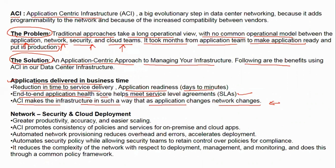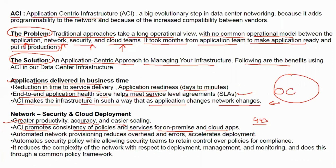ACI provides greater productivity, accuracy, and easier scaling. It promotes consistency of policies and services for both on-premise and cloud apps. With ACI you can do micro-segmentation — for example, if you have a server that should only allow port 443, or if you have three to five workloads in a segment and you want them to not talk to each other, ACI can enforce that.